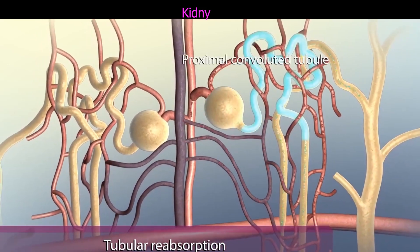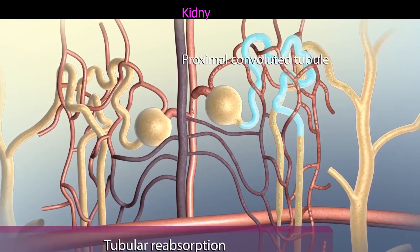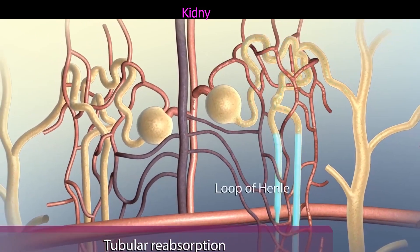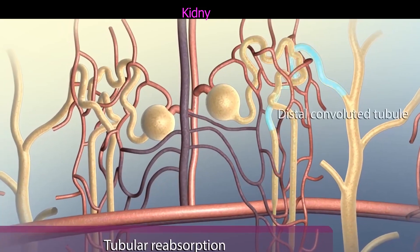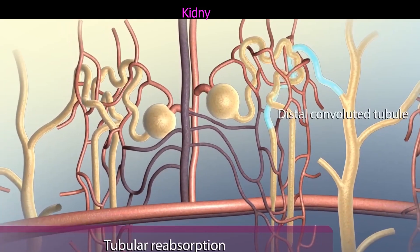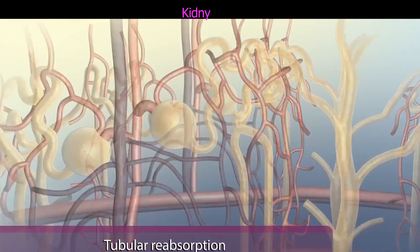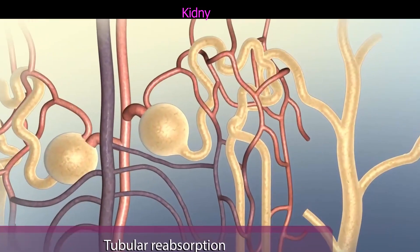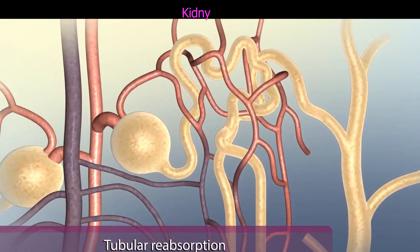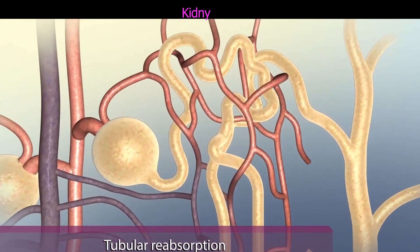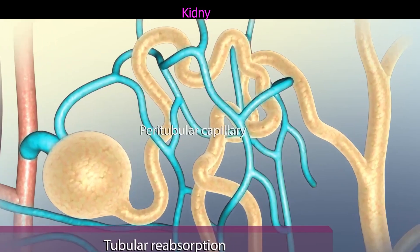The final step of urine production is tubular secretion, which occurs primarily in the distal convoluted tubules. These tubules extract larger nitrogenous wastes, excess hydrogen ions, and excess potassium ions from the peritubular capillaries and secrete them into the tubular fluid.